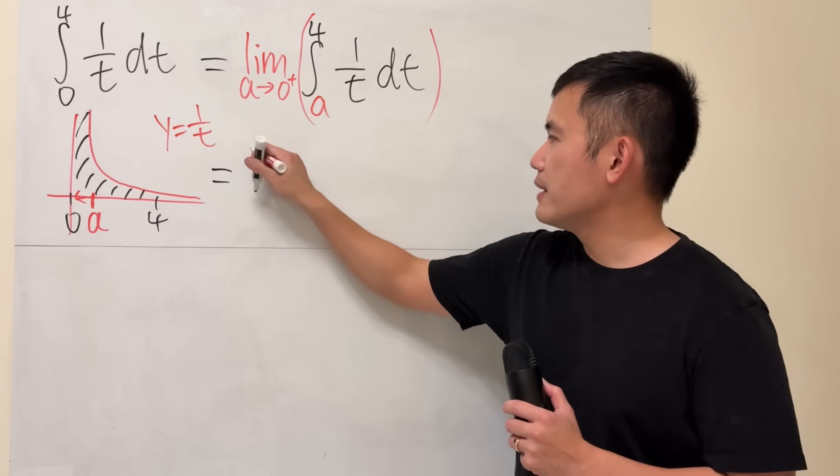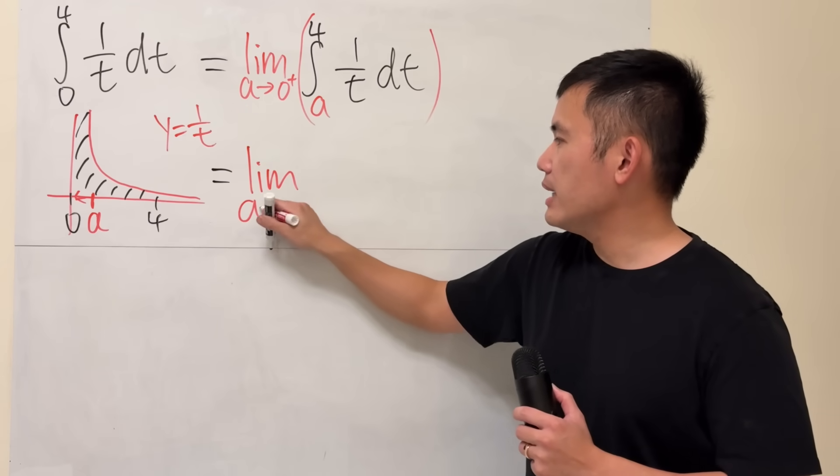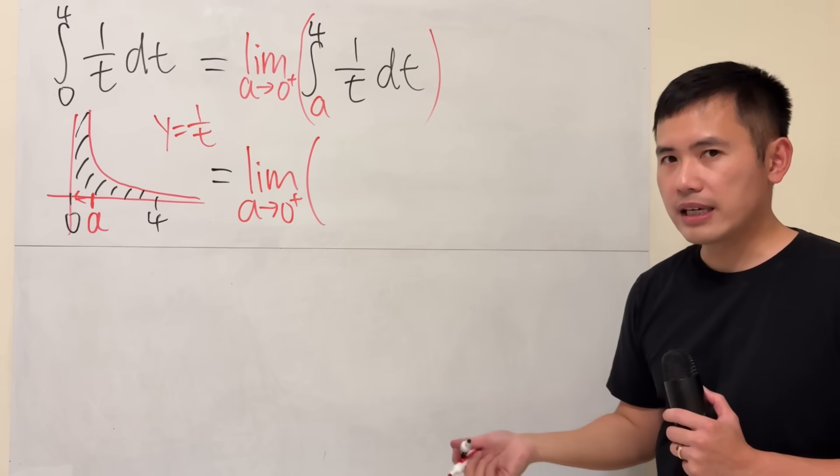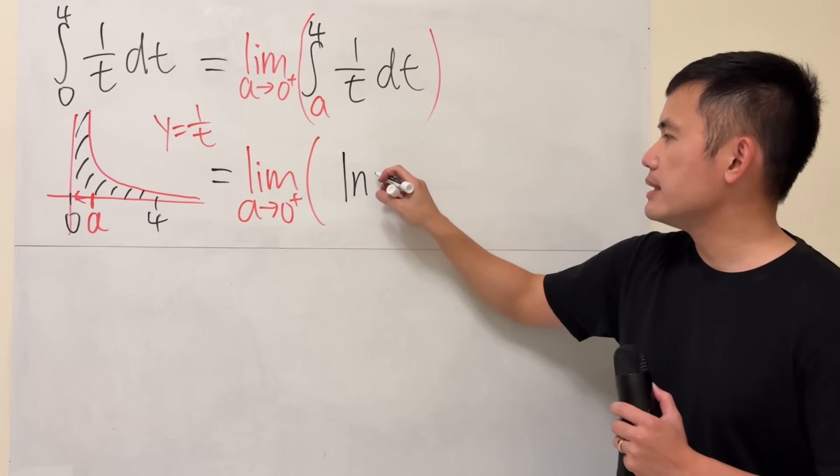So here we have the limit as a approaching 0 plus. And now, for the inside, just like earlier, we get ln t.